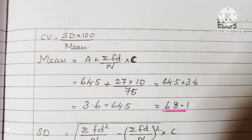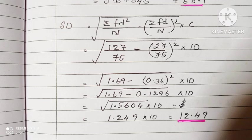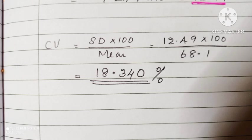Coefficient of variance is equal to standard deviation divided by mean times 100. Mean is equal to 68.1 and standard deviation is 12.49. Coefficient of variance equals standard deviation times 100 divided by mean. The final answer is 18.34. Since it is a percentage, we can say that 18.34 percent.